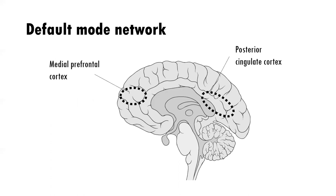The default mode network involves the medial prefrontal cortex and the posterior cingulate cortex. The default mode is the way we engage in non-active thinking — imagine you're driving home from work on a familiar road and your thoughts are just floating around, almost like daydreaming. That non-directed type of thought happens in the default mode network, and it's very important to emotional processing.